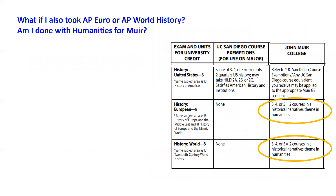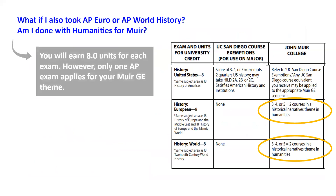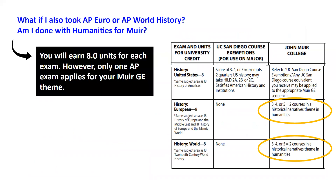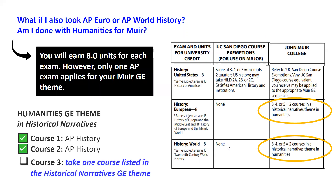What if you also have credit for AP European History or AP World History? You may see that these can count towards a Historical Narratives GE theme too — but that doesn't mean you're done for Humanities for Muir. You will earn eight units for each exam, but only one AP exam can apply towards your Humanities GE area. To complete a Humanities GE area, you need to take one more course from the Historical Narratives GE theme.